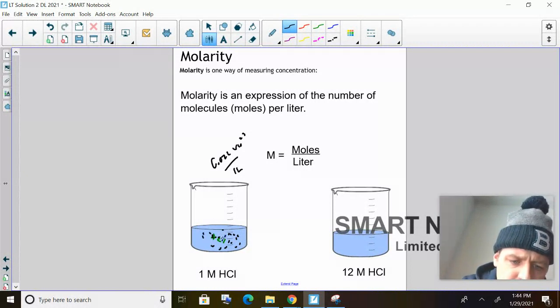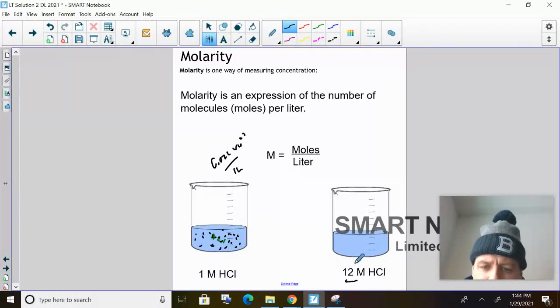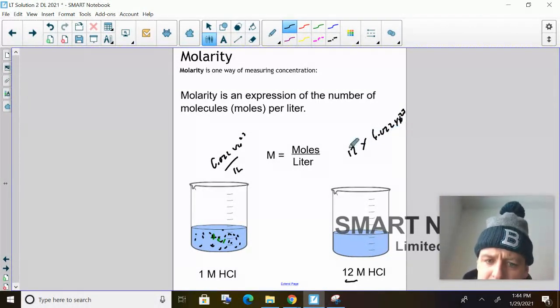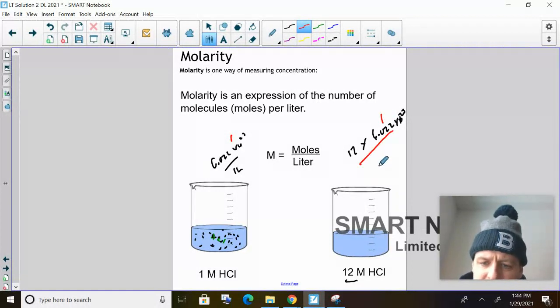So 6.02 HCl. But if I had 12, that would mean I would have 12 times 6.022 times 10 to the 23rd. That's the mole number. Remember, this is the mole, the standard, that's a mole, that's a mole divided by one, for every one liter.